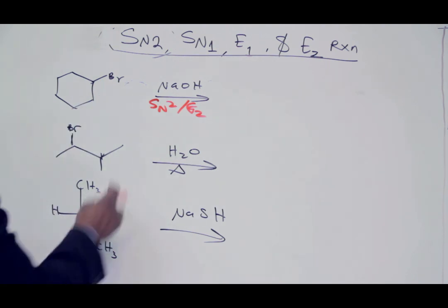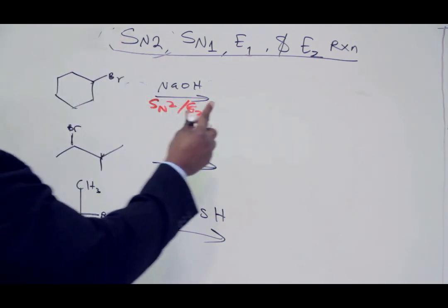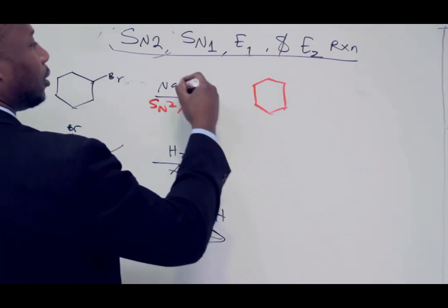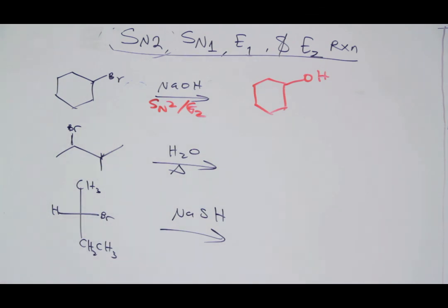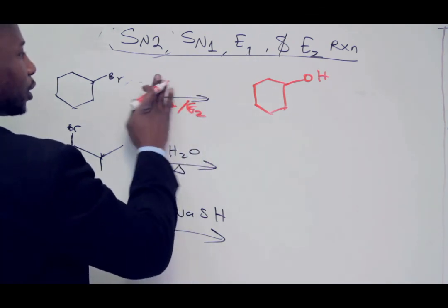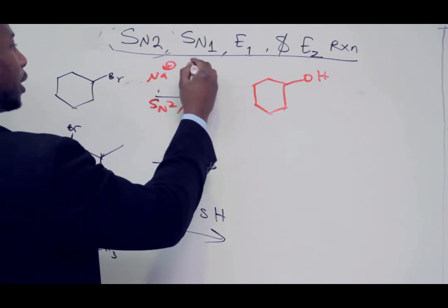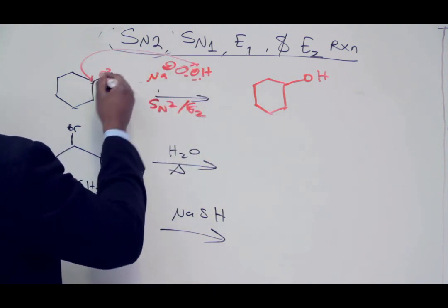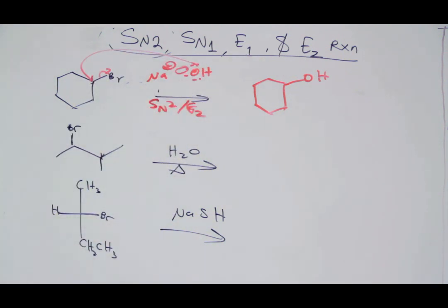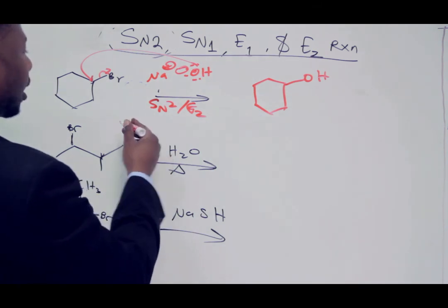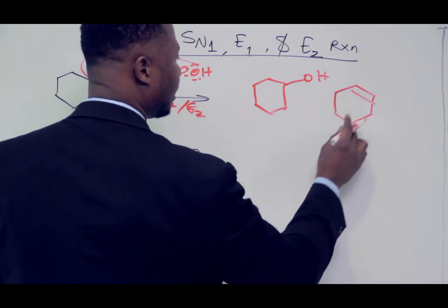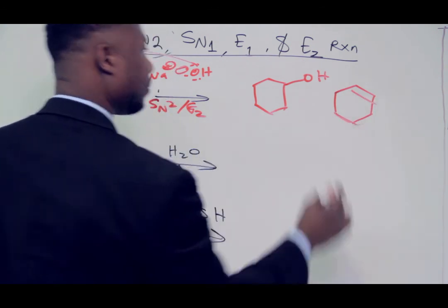For the SN2 product, there's no 3D here, so we don't have to draw the wedge and inversion — we just draw the products. Simply, what's attached? OH is attached, and that's it. If you want to know how this happened, just draw sodium here and OH here — this is the leaving group, this is going to attack it, and you have OH. The E2 product: if that goes away, you have just one product, and that's the elimination — the E2 product.